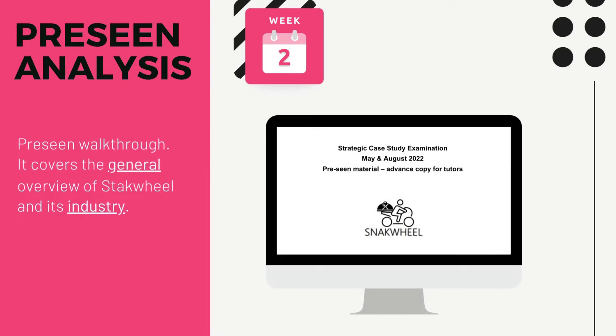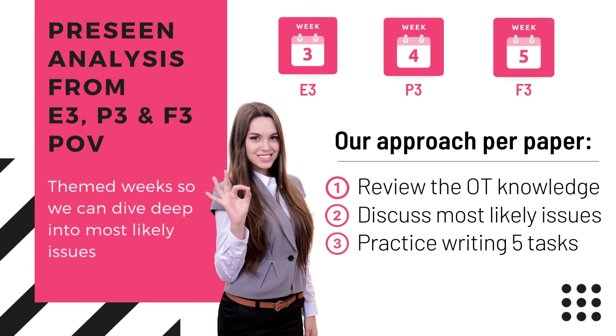After laying the groundwork, we'll move on to analysing the precinct. First we'll analyse everything on the document — our tutors are going to highlight all the important bits, analyse the information presented, and expand on it to give you more real-life examples. Industry analysis will also be included, and you'll find a handy summary document in there too. Then we'll move on to analysing the precinct from each paper's point of view. E3 is the leading paper in the strategic case study, so we're going to devote a full week to that.